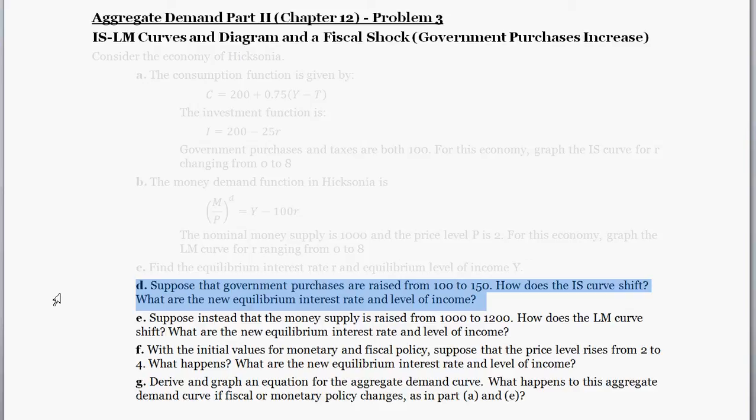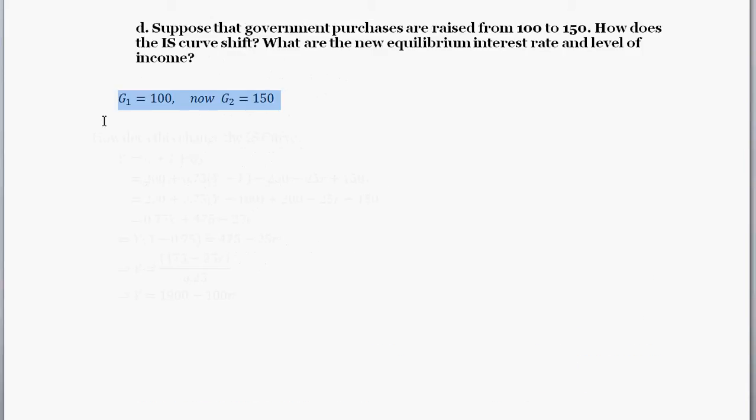So in this problem, we're going to be dealing with part D, which says, suppose that government purchases are raised from 100 to 150. How does the IS curve shift? And what are the new equilibrium interest rate and level of income? So basically, in the previous part of the problem, we had government spending equal to 100, and we solved through and found the IS curve. Now we have government spending jumping up to 150. So how do things change?